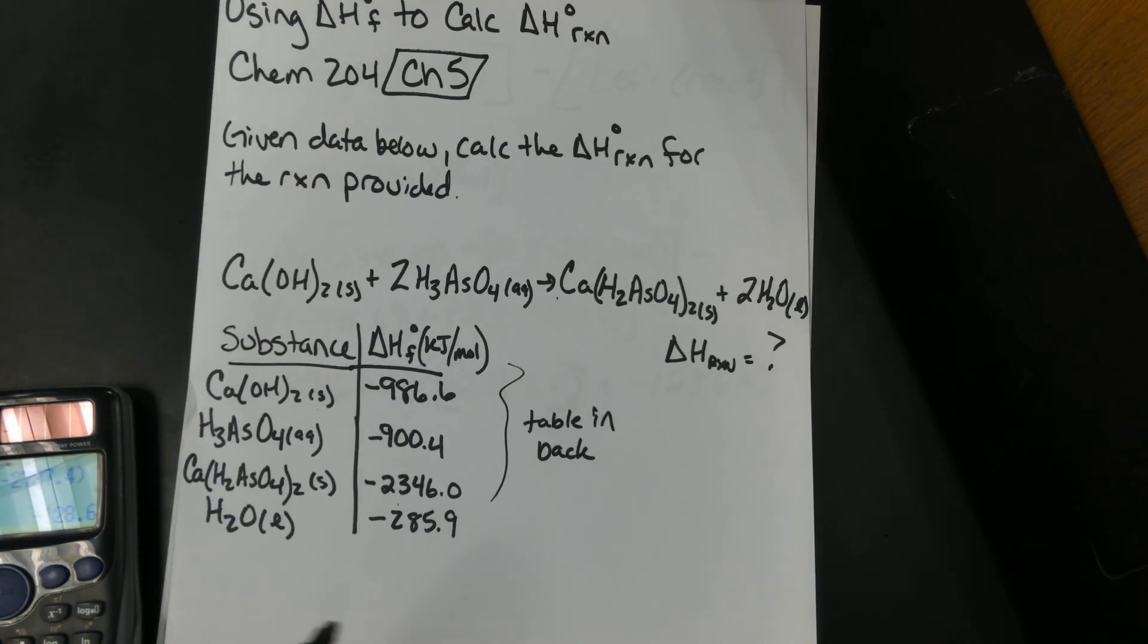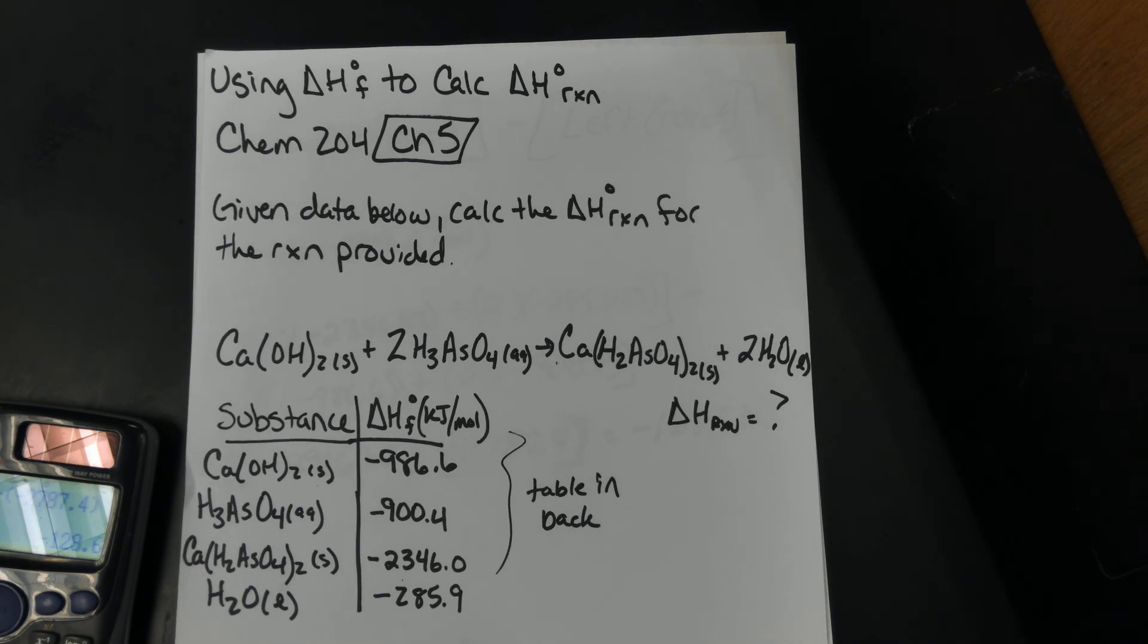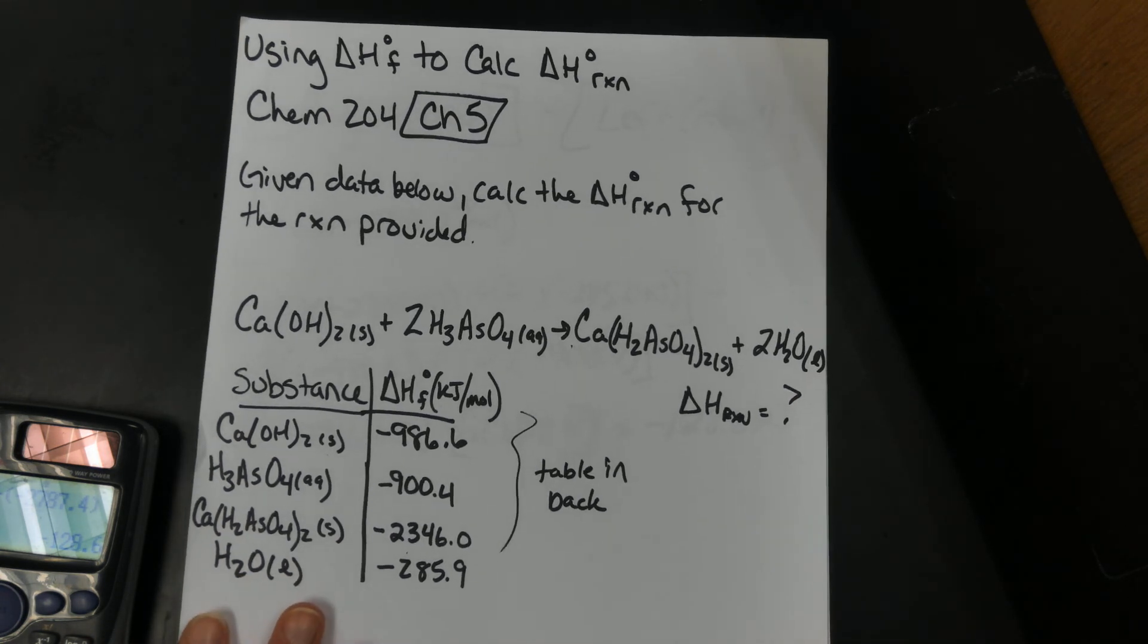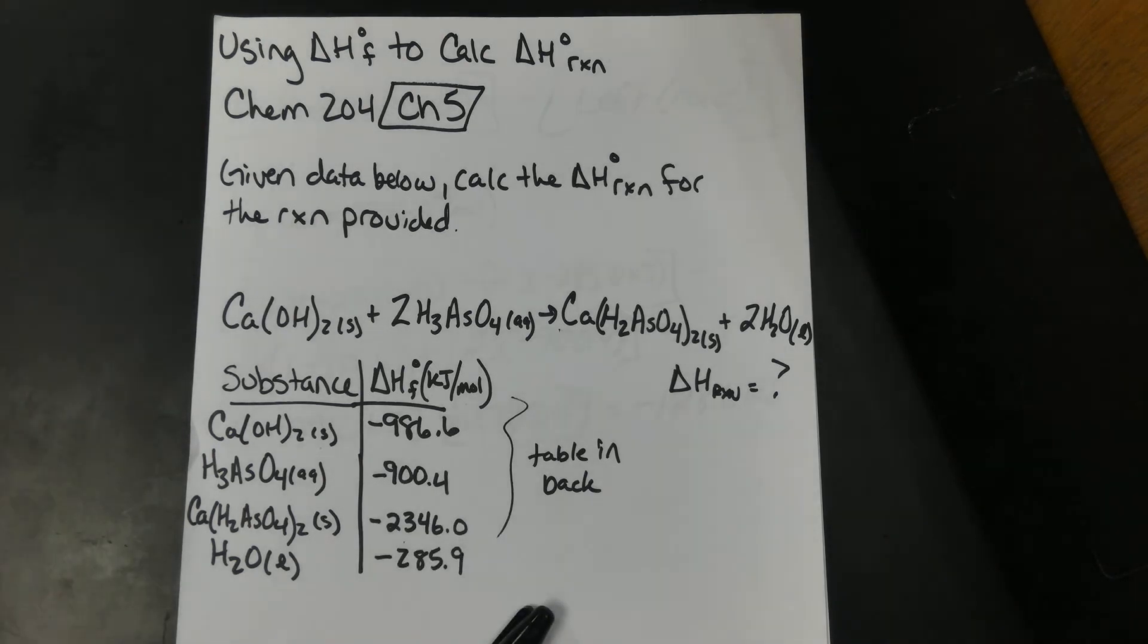So that is how you use enthalpy of formation. If you do have further questions about enthalpy of formation or what it really means, definitely take a look in the book. And it's good to know when an enthalpy of formation is expected to be zero, because that means that it's in its elemental form and how it exists naturally. So that's a really good thing to figure out. Good luck, everyone.